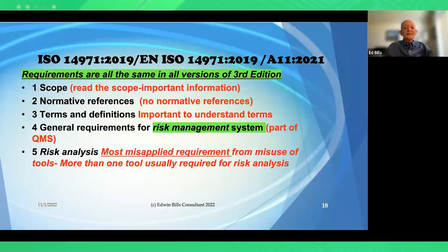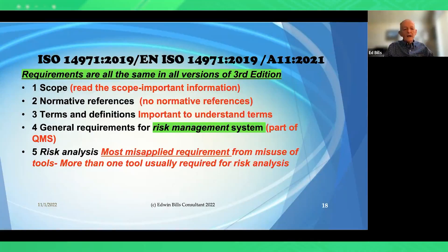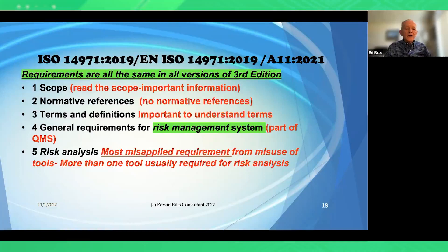Risk analysis is the most misapplied requirement and the most common area for misuse of tools. There is more than one tool required to do a good risk analysis. There are newer tools for usability-related risk analysis, which are better than use-FMEA. Multiple tools should be applied. Probably the most important is preliminary hazard analysis (PHA), which can be done as early as the research phase, before design controls are even applied.